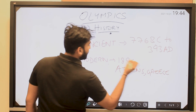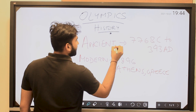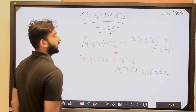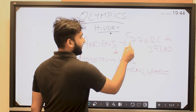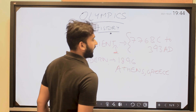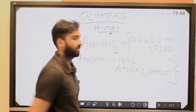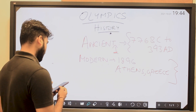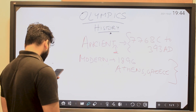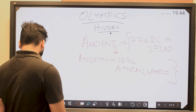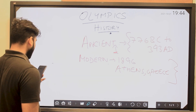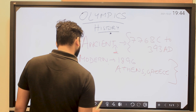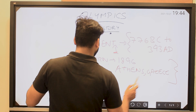It is very important to know the difference between these two. If asked about the ancient Olympics, the answer is 776 BC to 393 AD; if asked about the modern Olympics, the answer is 1896, Athens. Apart from this, you should know about the man responsible for the modern Olympics.